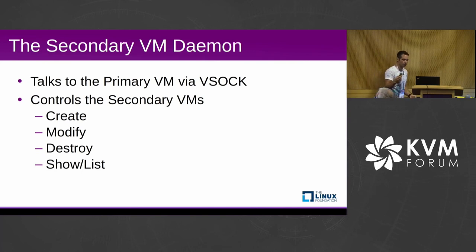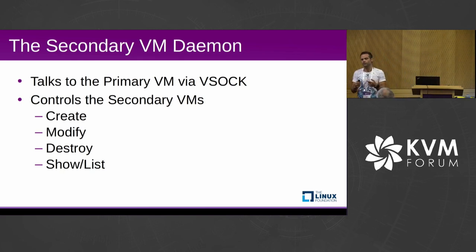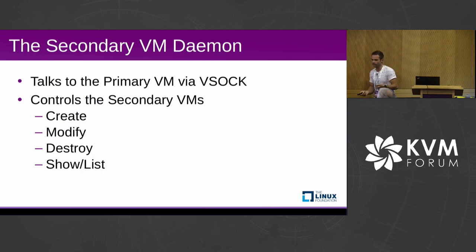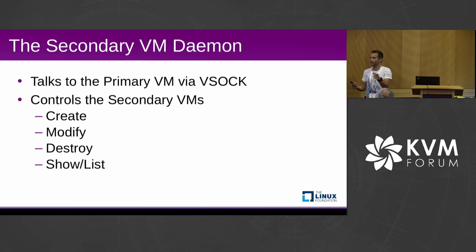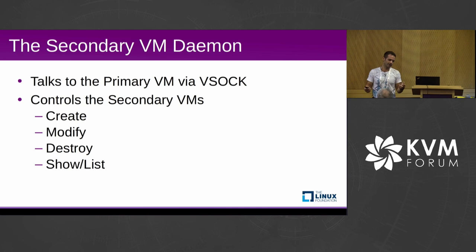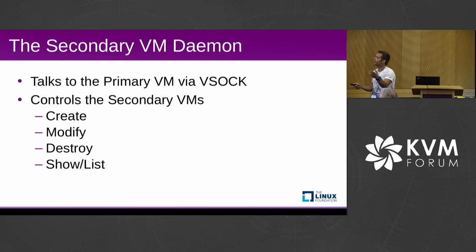The most important component is the daemon, which talks to the primary VM. The channel we use is VSOCK — an easy choice because it's only visible in virtualized environments, reducing the chance for other software to interfere. We can use the ID of the primary VM's VSOCK device to distinguish traffic between all primary VMs. This also gives us a way to demote a primary VM to a standard VM: just remove the VSOCK device and the secondary drive.